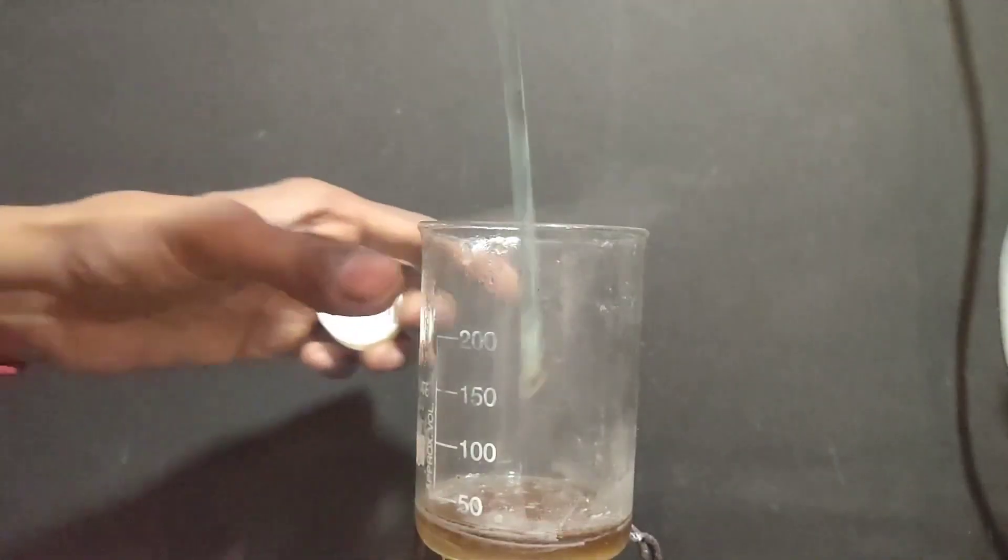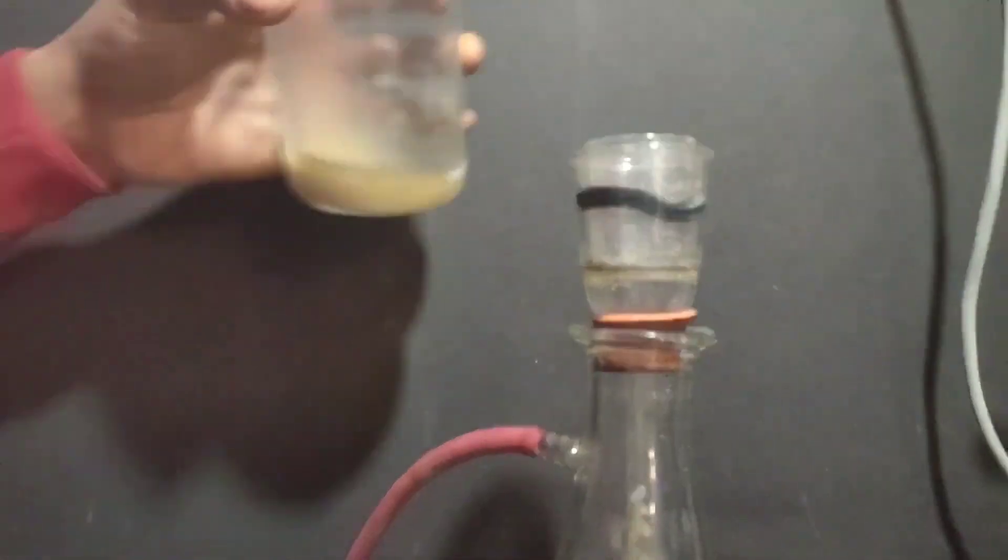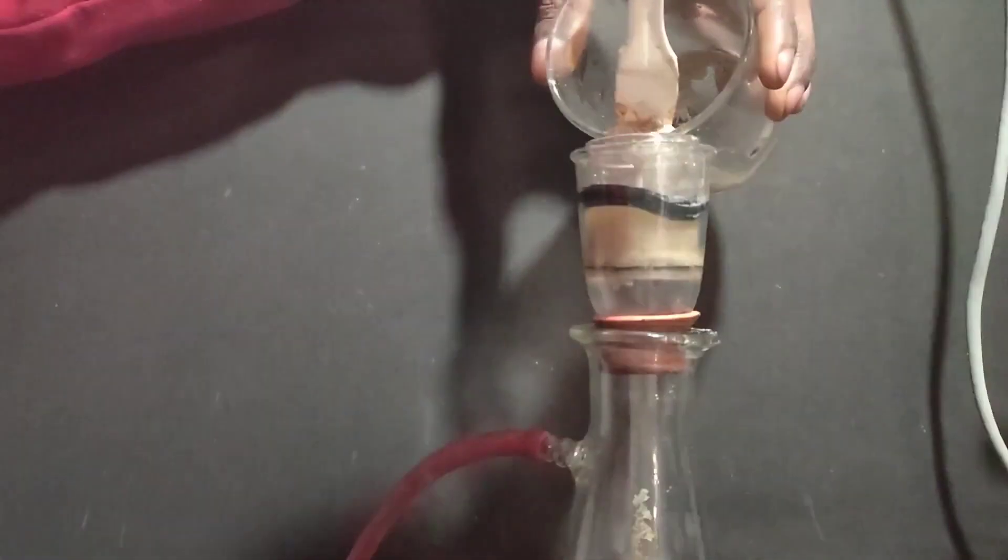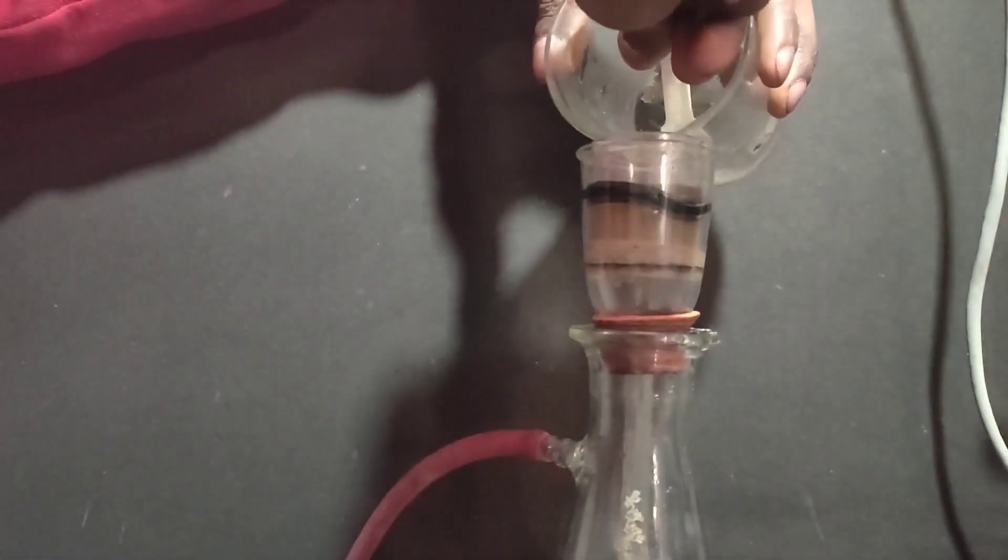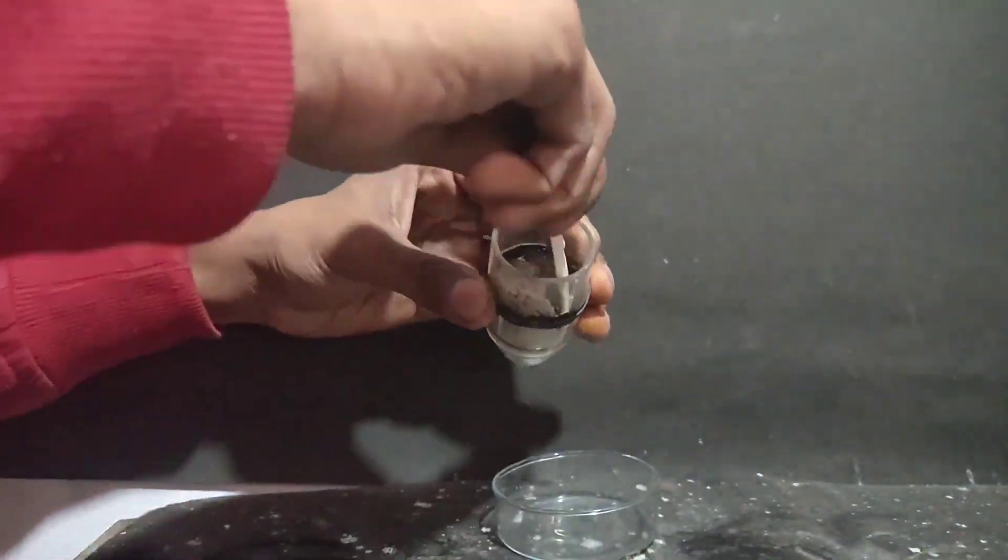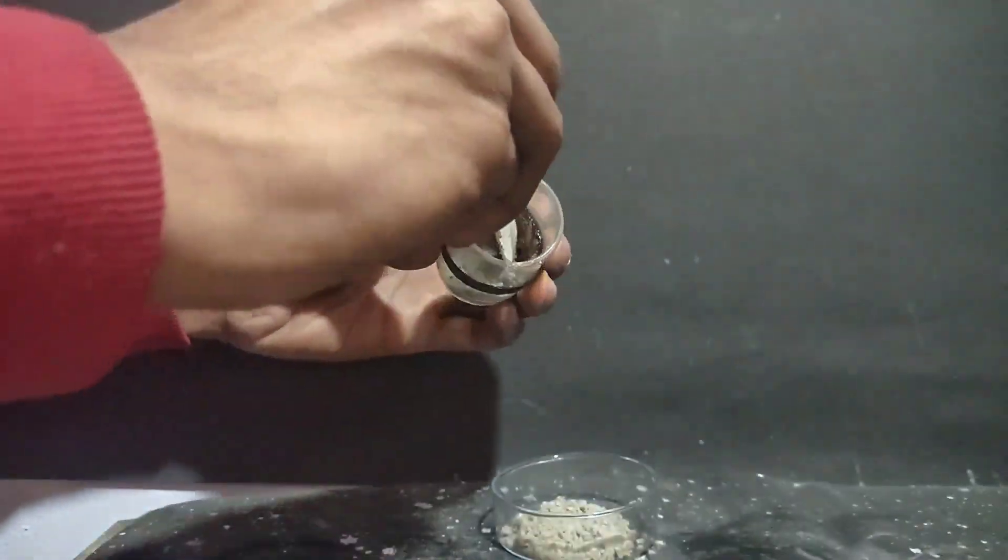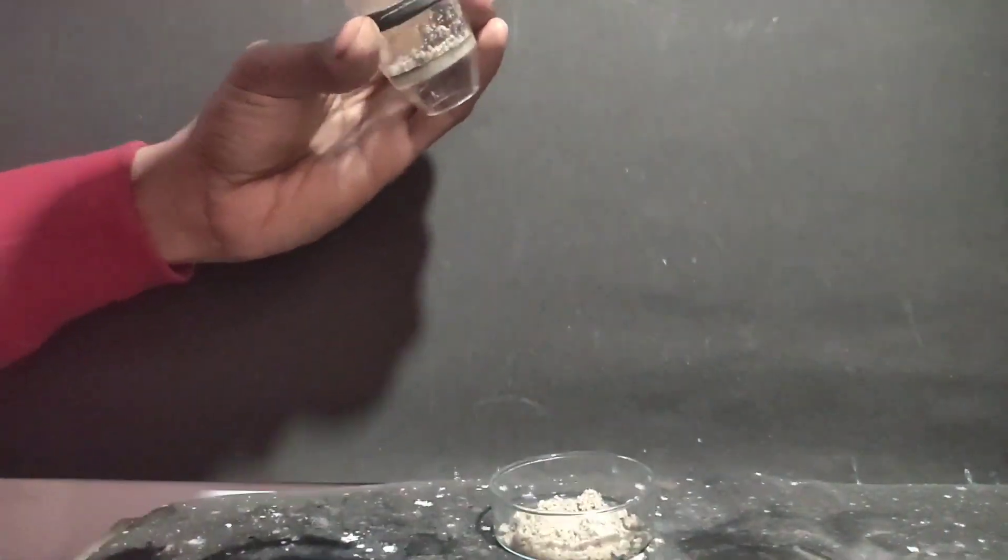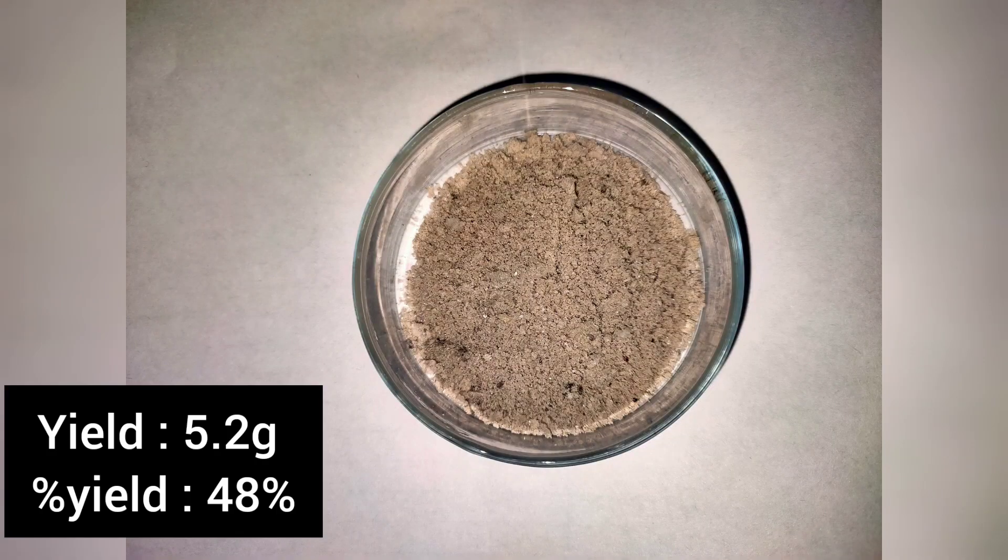When the solution was concentrated and cooled, the potassium iodate formed was filtered off using vacuum filtration on a sintered glass crucible. All the crystals were taken out using a plastic spatula in a small petri dish. The crystals were off-white due to some impurities. The yield was 5.2 grams which corresponds to a percentage yield of 48%.